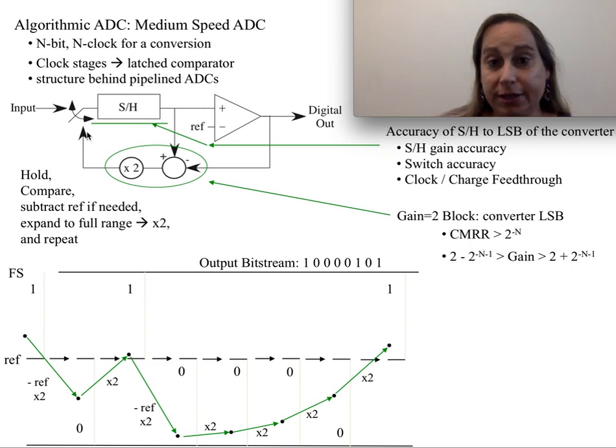You might think, okay this is great, nice structure, not too many things that can go wrong. Obviously you want to make sure your comparator is at the resolution or better, which means you need to be at half an LSB level to deal with this comparison correctly to get the linearity of the ADC you're looking for.